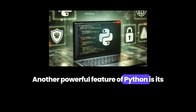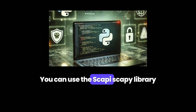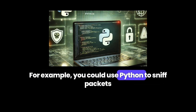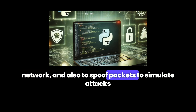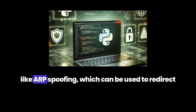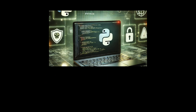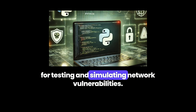Another powerful feature of Python is its ability to handle packet sniffing and spoofing. You can use the Scapy library to capture network traffic, analyze it, and even create and send custom packets. For example, you could use Python to sniff packets to detect insecure protocols or potential attacks on the network, and also to spoof packets to simulate attacks like ARP spoofing, which can be used to redirect traffic on a local network. These capabilities make Python a powerful tool for testing and simulating network vulnerabilities.